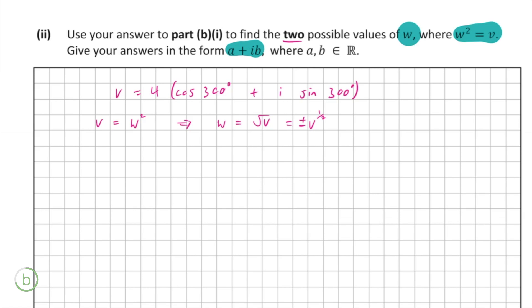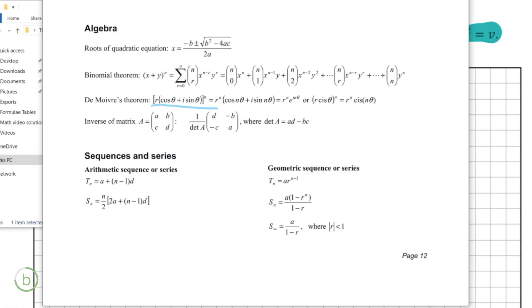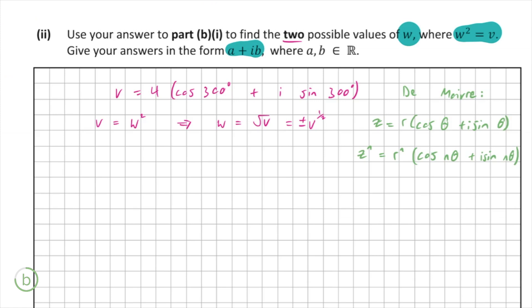So every time you're dealing with complex numbers and something to do with indices comes up, so you're putting a complex number to the power of anything really, you can use De Moivre's theorem, which is in the log tables. So here is De Moivre's theorem. You won't actually have to remember it, although it is pretty easy to remember, I would say. So given that, we can now use that to find v to the power of a half, and then make it either negative or positive.